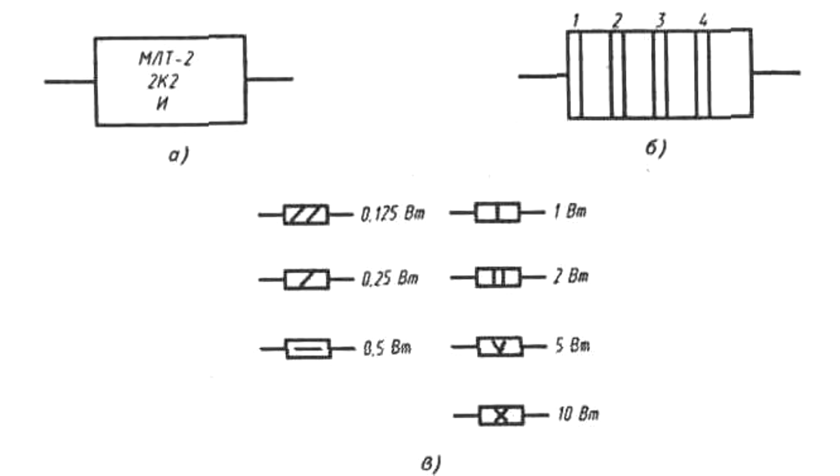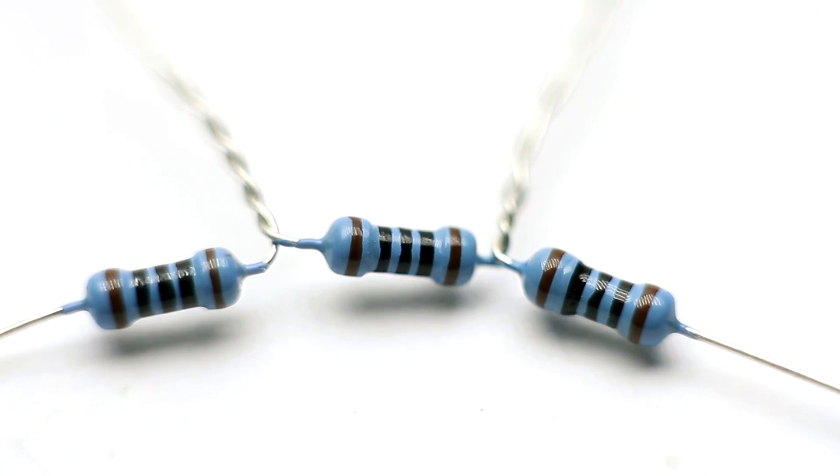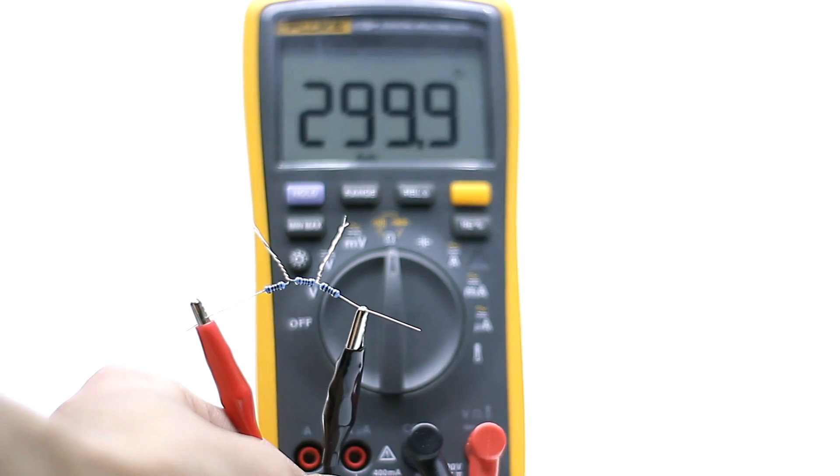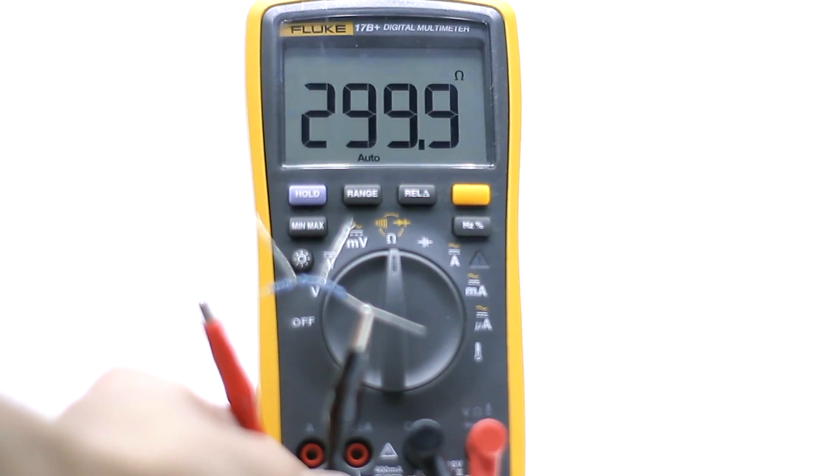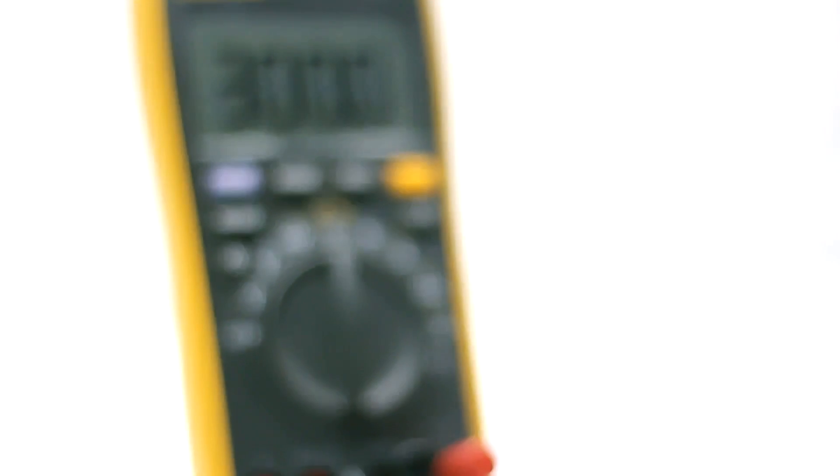Resistors, as other passive components, may be connected in series and parallel. If connected in series, the total resistance of the chain equals the sum of the resistance of all the resistors. The number of resistors connected in series can be anyone, and the total resistance is always greater than the resistance of any single resistor.